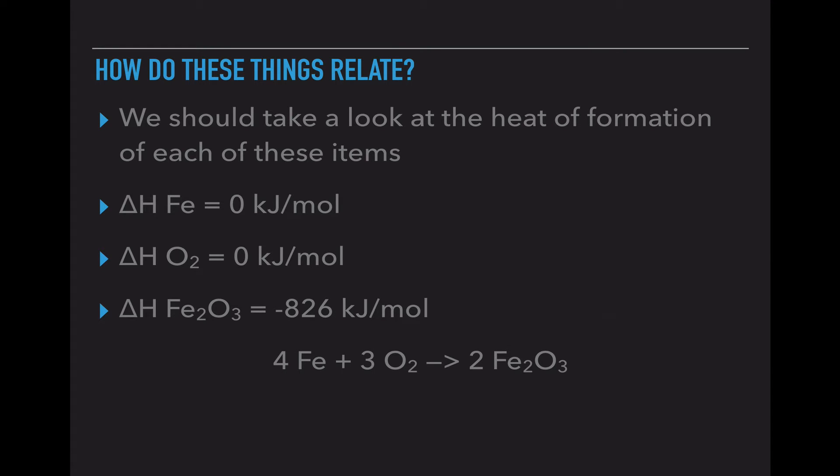So we're going to take a look at the heat of formation of each of these items. Essentially how much energy it takes to make these items. The heat of formation of iron is zero kilojoules per mole. That means it doesn't take any energy to make it. It's already present, it's already here, and no energy is needed.